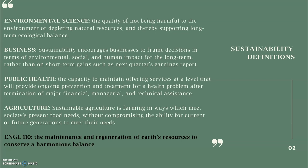Some of you may have heard of deforestation, where entire forests are cleared to produce more food, or the Amazon fires. Some of you might have even gone vegan because you believe how you get food should not harm another species. Sustainable agriculture is about how you get the food you need without harming another entity or compromising future generations' ability to meet their needs.